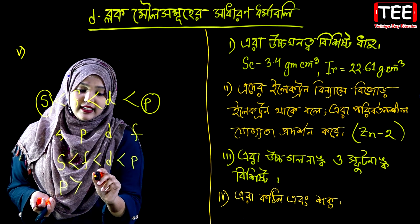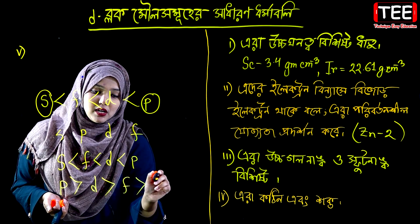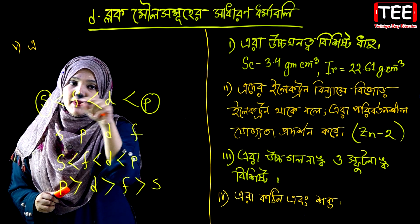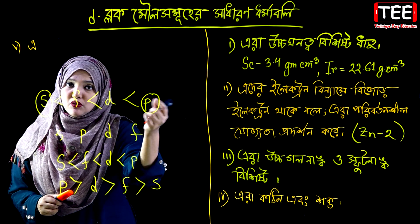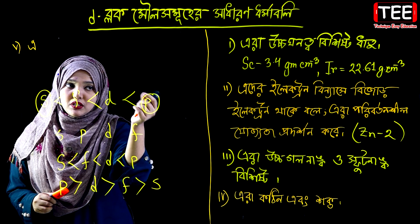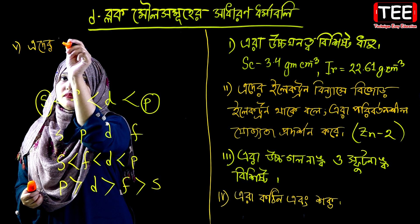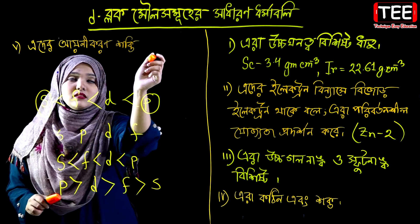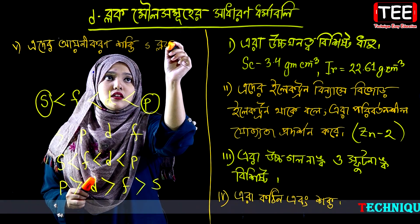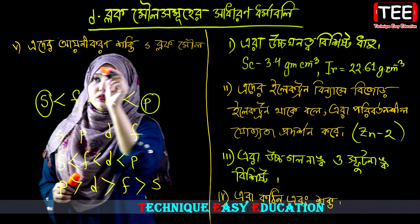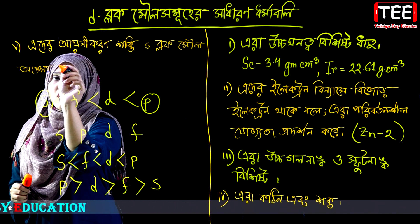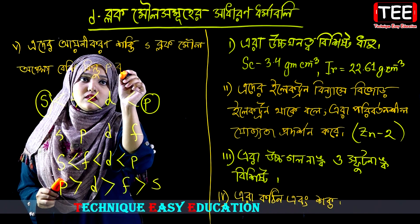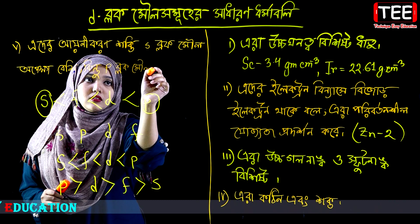In S-block the ionization energy is highest, then D-block, then F-block, and then P-block has lower ionization energy than S-block. D-block elements have higher ionization energy compared to P-block and F-block elements.